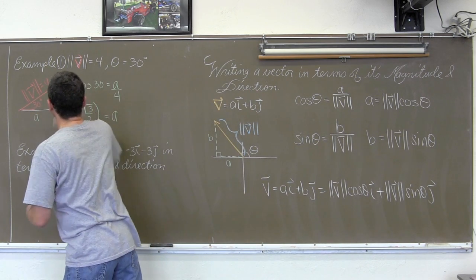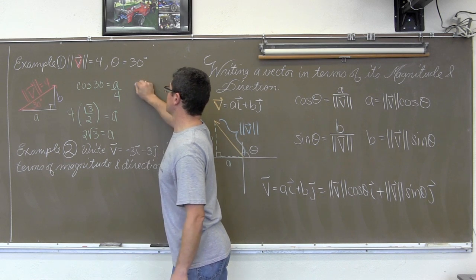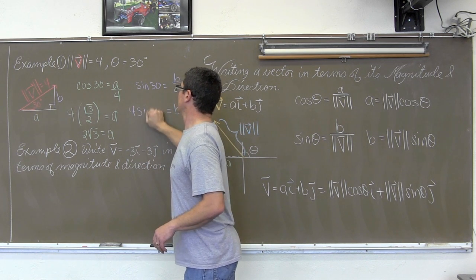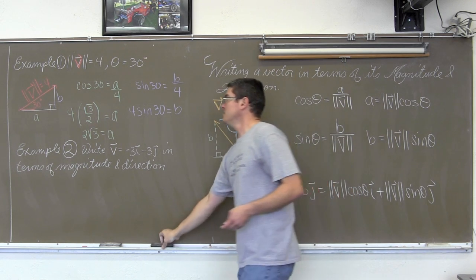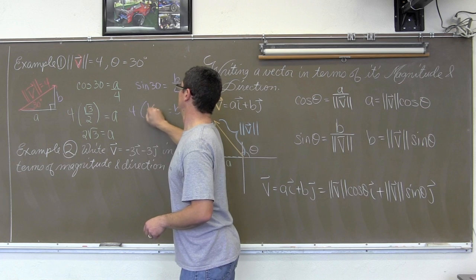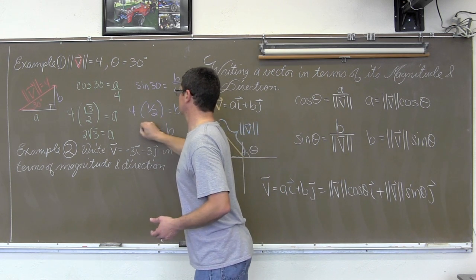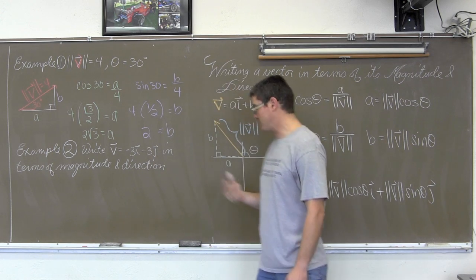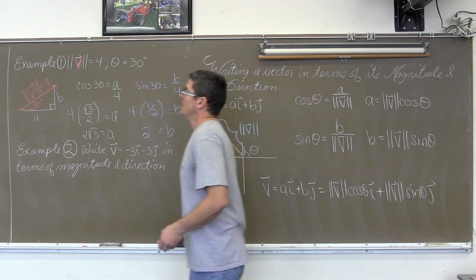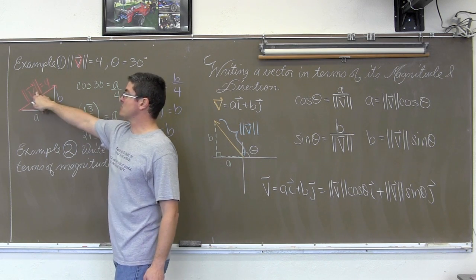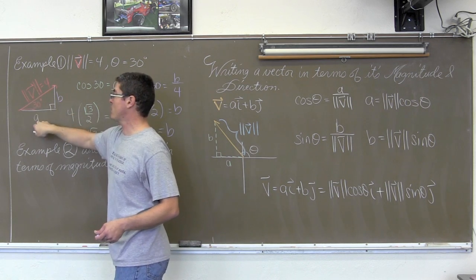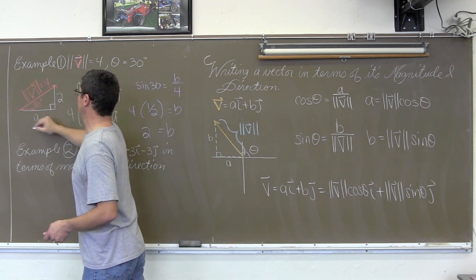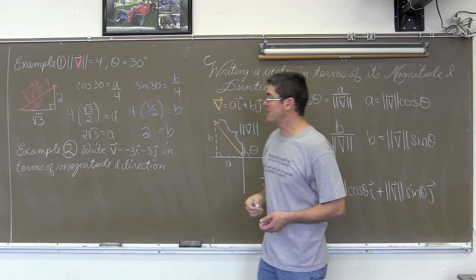The vertical component b is going to be found through sine. The sine of 30 is equal to b over the magnitude of the vector, which is 4. So b is equal to 4 times the sine of 30. The sine of 30 is equal to one half, and half of 4 is equal to 2. You might also note that I have drawn a 30-60 triangle. The side opposite 30 is 1, the hypotenuse is twice as long, and the side opposite 60 is square root of 3 — giving ratios 1, 2, square root of 3, or x, 2x, x square root of 3. So we could have said from our knowledge of special triangles that this side is 2 and this side is 2 square root of 3, without even using trig functions.